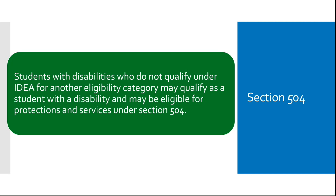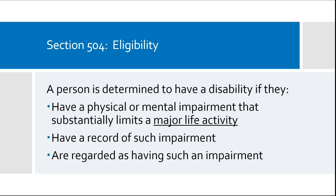Students with disabilities who do not qualify under IDEA for another eligibility category may qualify as a student with a disability and may be eligible for protections and services under Section 504. To be eligible, a person is determined to have a disability if they have a physical or mental impairment that substantially limits a major life activity. Major life activities include caring for oneself, performing manual tasks, seeing, hearing, eating, sleeping, and major bodily functions such as functions of the immune system, normal cell growth, digestive, bowel, bladder, neurological, brain, respiratory, circulatory, endocrine, and reproductive functions, or are regarded as having such an impairment. A 504 plan describes the accommodations the school will provide to the student, as well as documentation of evaluations and directions for delivering those services or making accommodations.